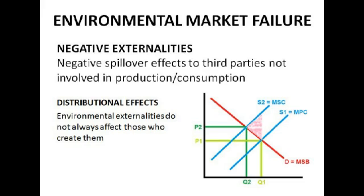Environmental market failure is any market failure that has a negative impact on the environment. Negative externalities are negative spillover effects to third parties not involved in production or consumption. The diagram shows that social costs are greater than private costs. Profit-maximising firms in a competitive market only take into account their own costs, not pollution affecting the environment. The free market equilibrium for any demerit good is at a price less than social equilibrium, causing allocative inefficiency — that triangle is welfare loss.